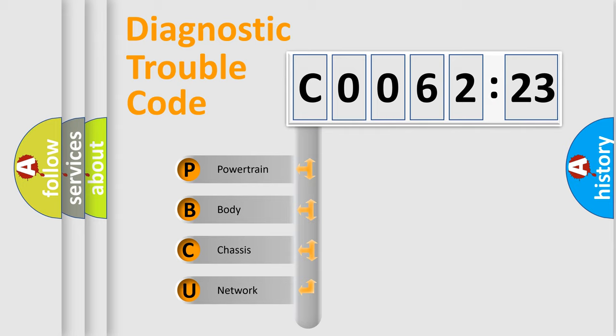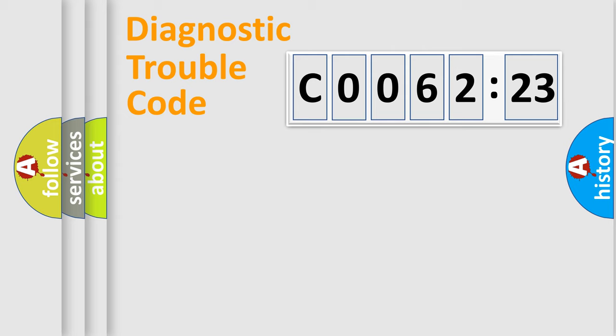We divide the electric system of automobile into four basic units: Powertrain, Body, Chassis, and Network.